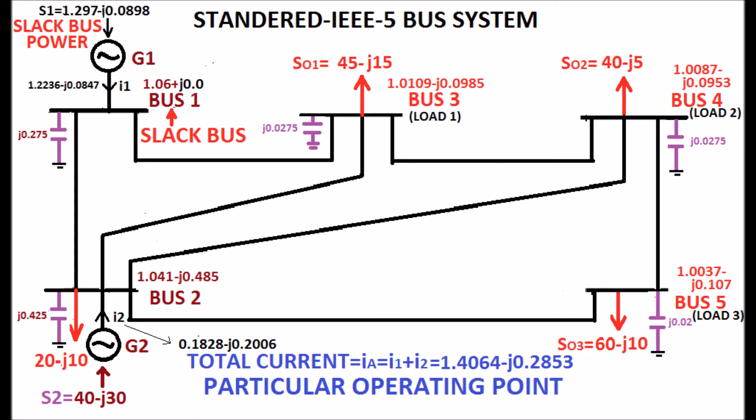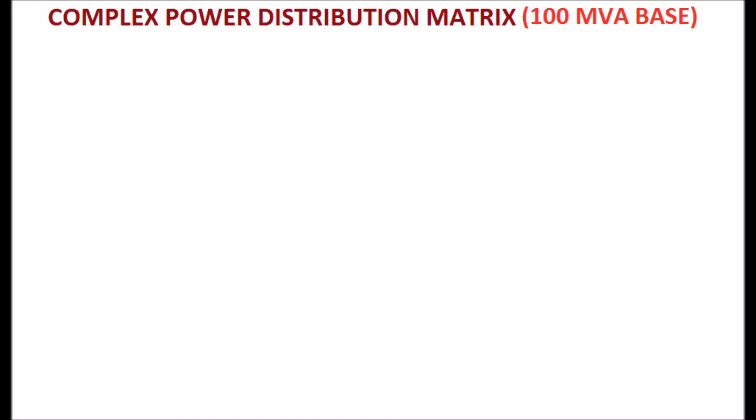In order to calculate the elements of complex power distribution matrix, we need only generator currents I1 and I2, which are displayed. The values are calculated from load flow. The total load current is also shown in the display.